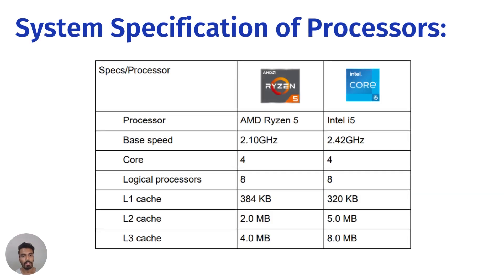First, we compared Ryzen 5 versus Intel Core i5. The specifications we used as a baseline for all processors were processor base speed, cores, logical processors, L1 cache, L2 cache, and L3 cache. Depending upon the performance variations on these specifications for running the bubble sort algorithm, we deduced which processor performed better.